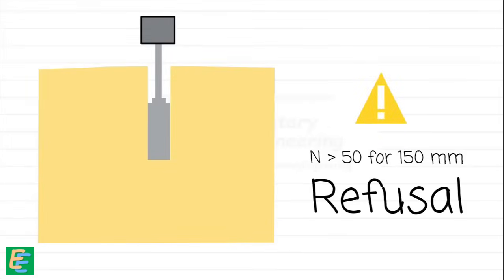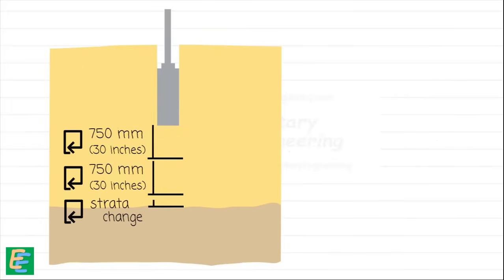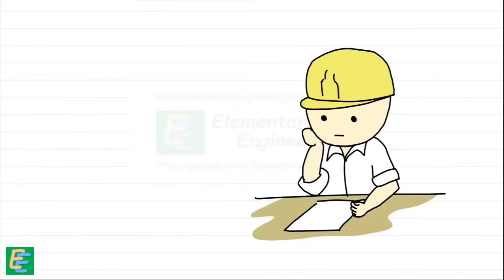We repeat this penetration test at regular intervals of 75 centimeters in the vertical direction or wherever there is a noticeable change in soil strata. An average N value is then obtained, giving us a comprehensive understanding of the soil's bearing capacity and overall strength.